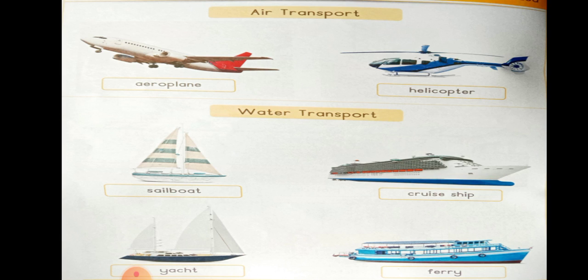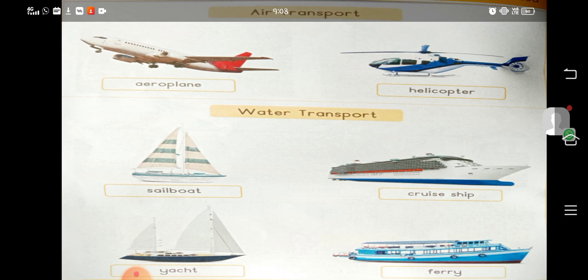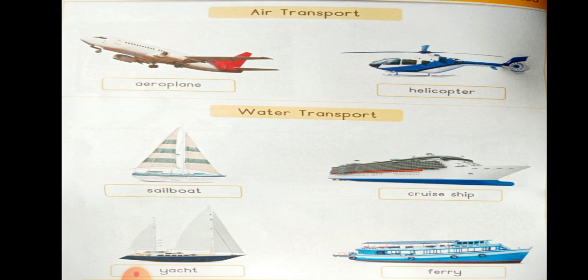Then water transport. Water transport includes sailboat, cruise ship — that is a luxury ship — yacht, that is a small boat, and ferry. Identify the names of water transport. Okay kids, thank you!